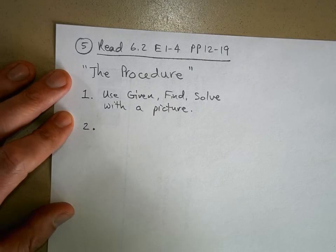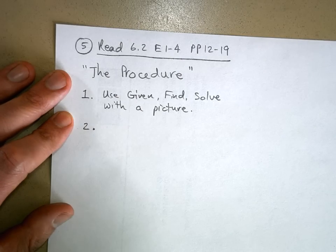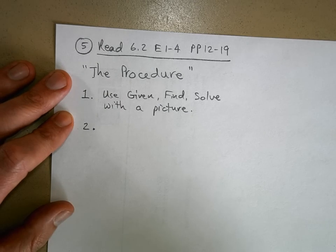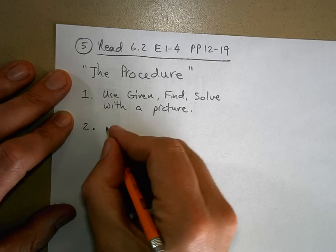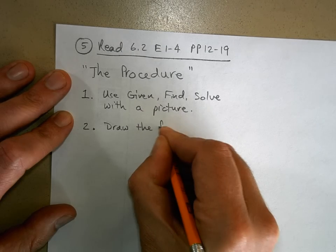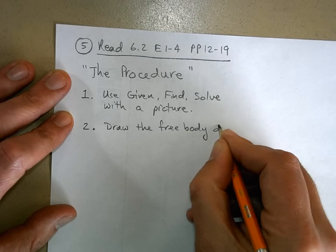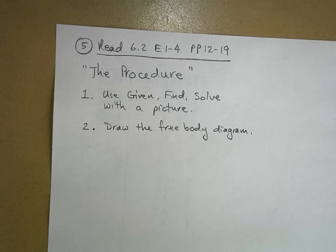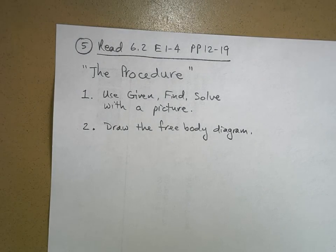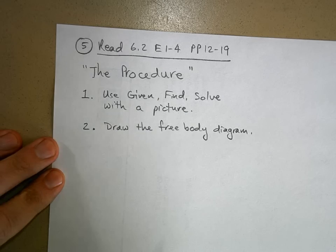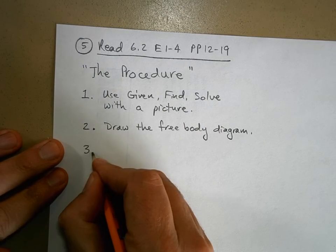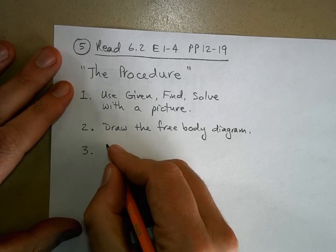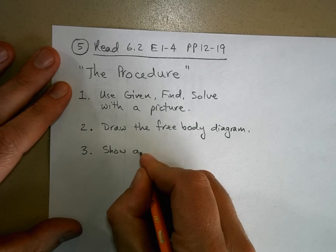Step two: after you set up the problem, you write down what's given around that picture and identify what you're trying to find. Then it's time to solve it. You're going to have to draw the free body diagram. You'll have a car, a person, or some object of interest that has forces applied to it. We want to analyze the forces acting on it, so we draw a free body diagram of that object.